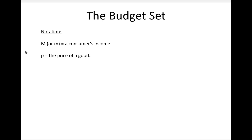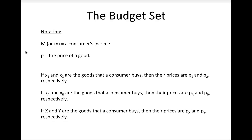No matter how we represent the quantities of goods that a consumer buys, we will always use the same letter to represent a consumer's income — that letter is M. You may be wondering why we use M instead of I. In economics, the letter I is reserved to describe the interest rate, so we use M for income. Similarly, we will always use the letter P to represent the price of a good, and we will let our notation for prices correspond to the notation we use for quantities. So if we use numerical subscripts for quantities, we use numerical subscripts on prices as well, and likewise for letter subscripts.